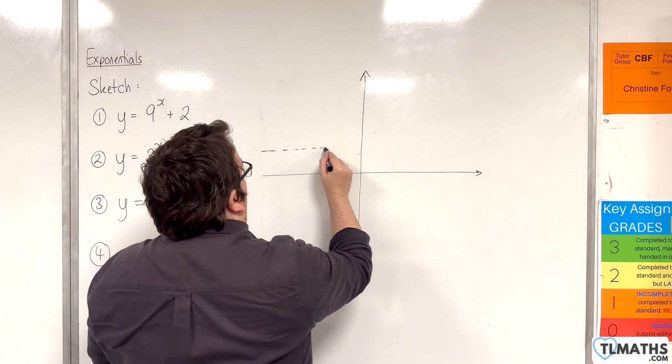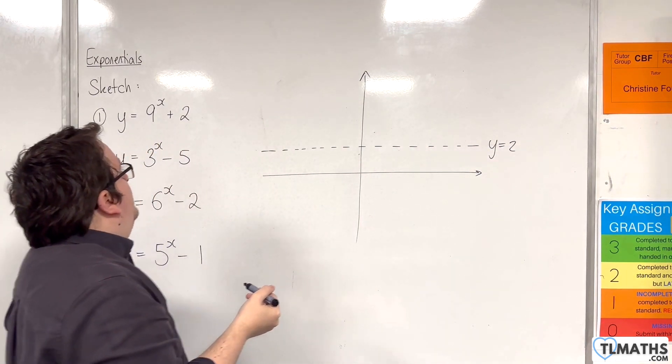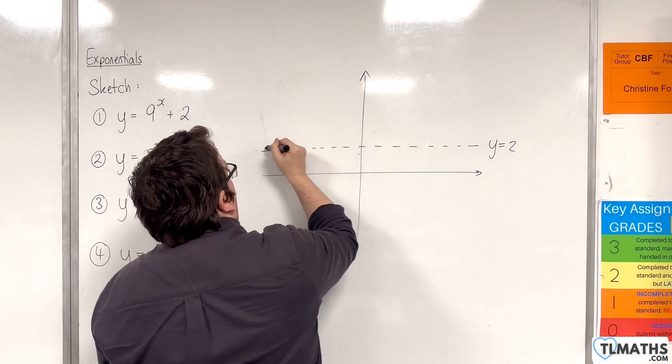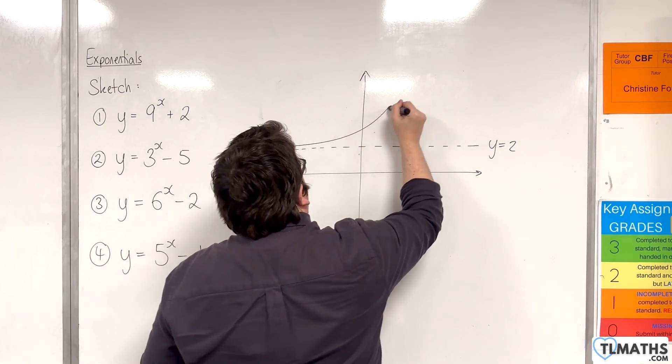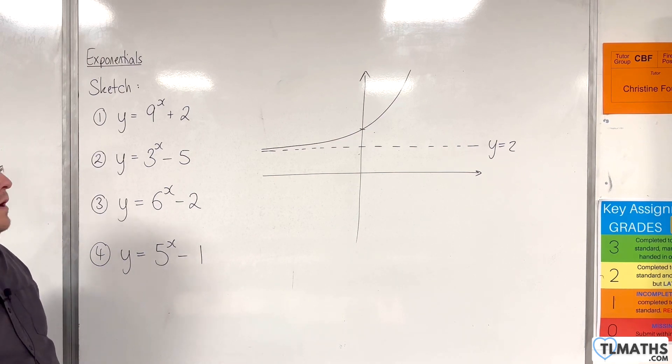So y equals 2, and make sure you label it. And then your curve will look like this.